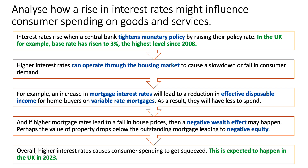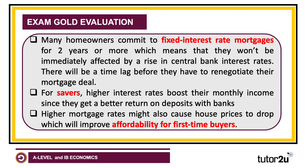This is certainly what we're expecting to happen in the UK in 2023, because we're forecasting a recession. A little bit of evaluation, of course — we've talked about variable rate mortgages, but many homeowners, perhaps 75 to 80%, commit to a fixed interest mortgage for two, three, even five years. So they won't be immediately affected by rising interest rates. There will be a time lag before they have to go back to their mortgage broker, their lender, to renegotiate their deal — and they get a shock when they do that.